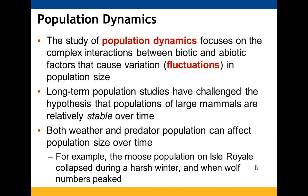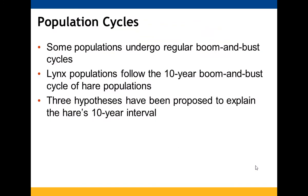Population dynamics looks at both biotic and abiotic factors causing population size fluctuations. Long-term population studies have challenged the hypothesis that large mammal populations are typically stable. Weather and predator populations can affect population size — at Isle Royale, a moose population collapsed during a harsh winter, and wolf numbers subsequently skyrocketed. Some populations undergo regular boom-and-bust cycles, as we're seeing with cicadas, and lynx populations tend to follow the ten-year boom-and-bust cycle of hare populations.